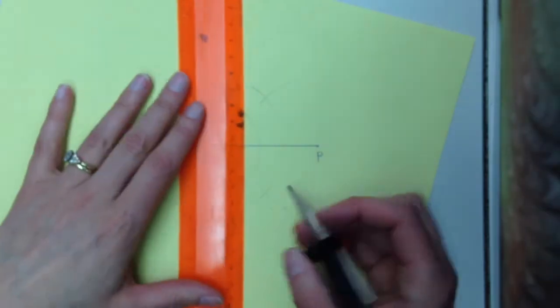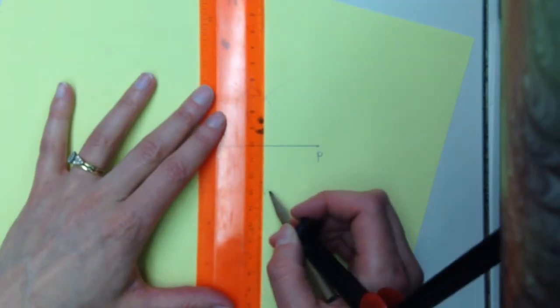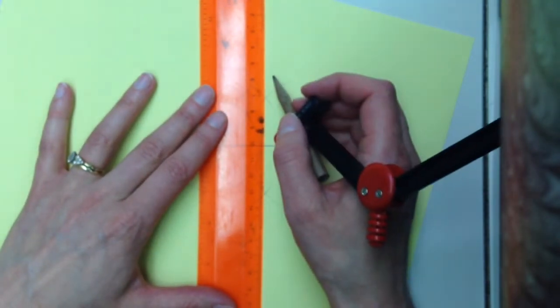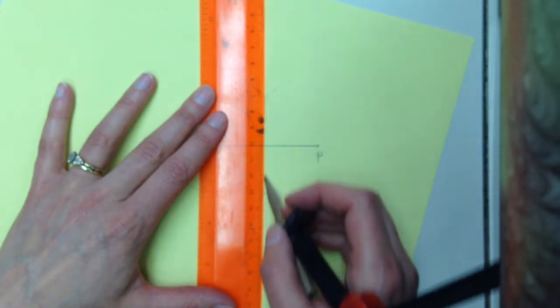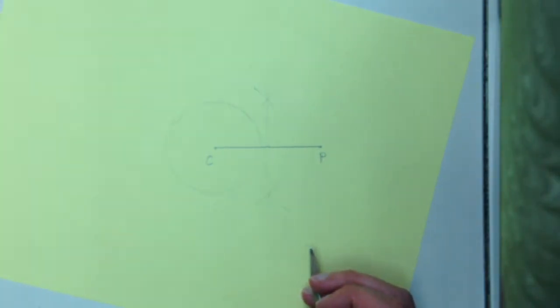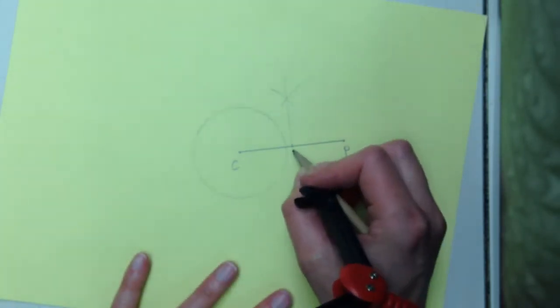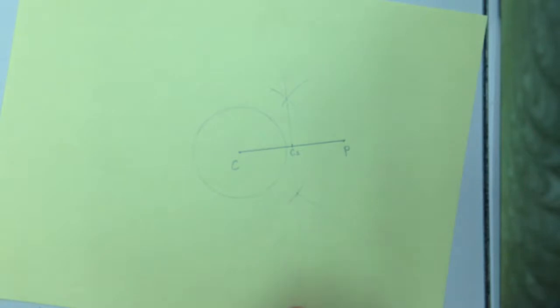So when I now use my ruler and connect those two points, I'm going to do this line very lightly. That line shows me where the center of my new circle is going to be. So this is now the center point. I'll put a little two for circle two.